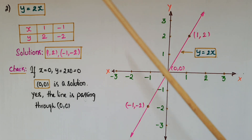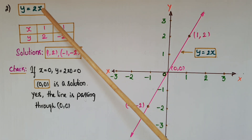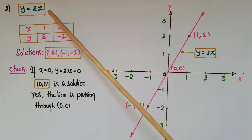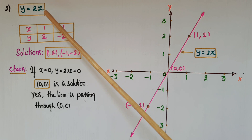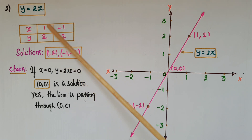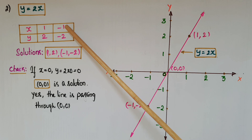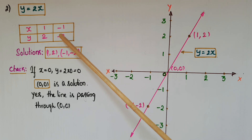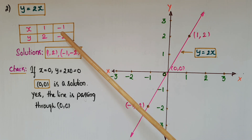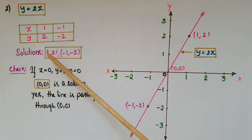Here is another problem. If we want to show y is equal to 2x on the graph, first find two solutions for this equation. If x is equal to 1, then y is equal to 2. If x is equal to minus 1, then y is equal to 2 times minus 1, that is minus 2. So the solutions are (1, 2) and (-1, -2).